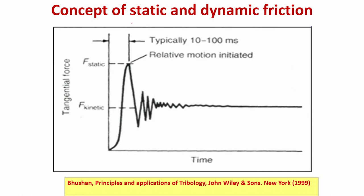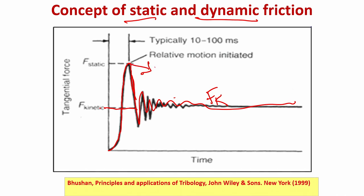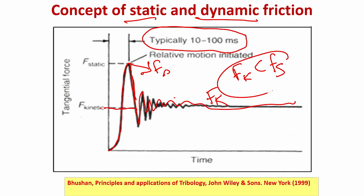Now introducing two different terms: static friction and kinetic friction. In any sliding experiment, the friction force initially goes very high then drops down to a steady state. This steady-state value is the kinetic frictional force Fk, and the initial peak is the static frictional force Fs. Static friction is typically limited to 10 to 100 milliseconds, after which relative motion is initiated and kinetic friction is lower.